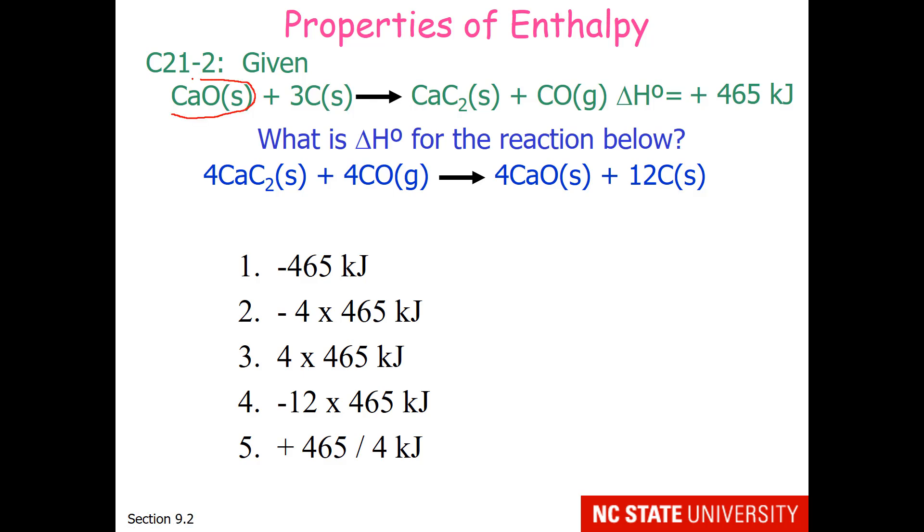For the top reaction, the calcium oxide is on the reactant side, and we have 1 mole. For the bottom reaction, the calcium oxide is on the product side, which means this reaction has been reversed, and you notice instead of 1 mole, we have 4 moles. If you check the rest of the materials, you'll find that they have switched sides, and their quantity has been multiplied by 4. So which one of these answers would that be?